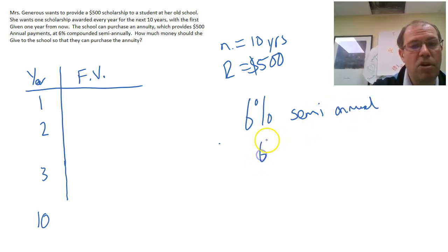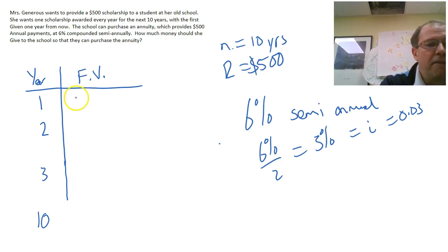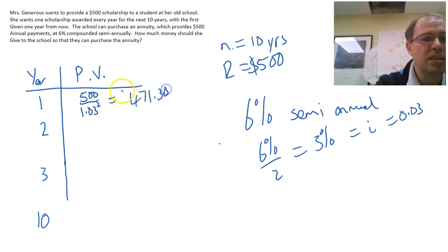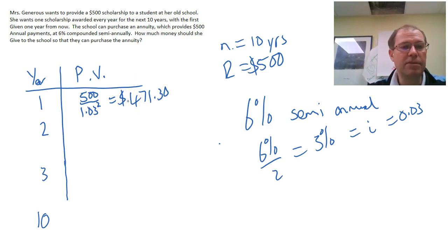Because it's semi-annual, as I showed before, we need to divide the 6% by 2 to get the 3% which is our i, our 0.03. But that's done twice. So the present value after one year, as we discussed just a second ago, is 500 divided by 1.03 squared. We worked that out as $471.30, which makes sense because the annuity after one year will cost less because it's earning interest twice.